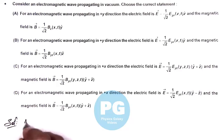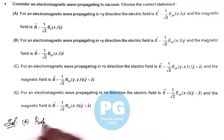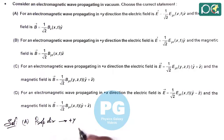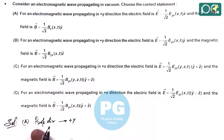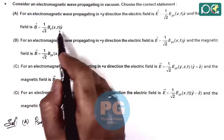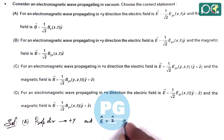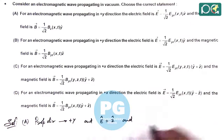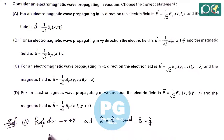If we check option A, it says for an electromagnetic wave propagating in the plus y direction, the propagation direction is given as plus y. Electric field is given along the z direction and magnetic field is given along the y direction. That's not possible, because if propagation direction is y, E and B must be in the x-z plane. So if E is along z direction, B must be along x direction for this to be possible. The unit vector along the magnetic field is along y direction, so this is not possible.